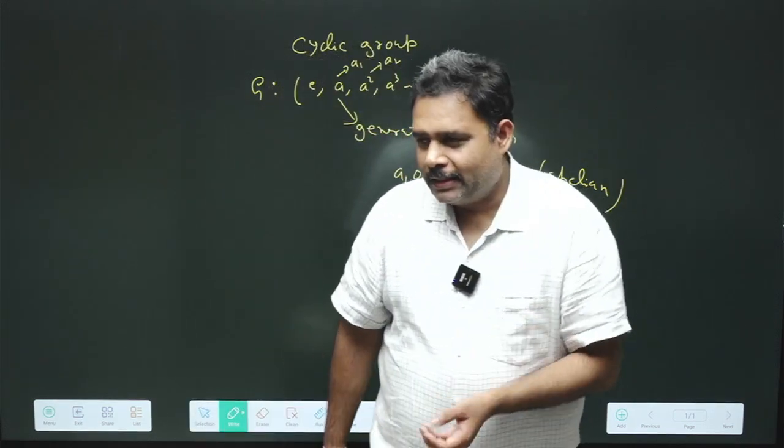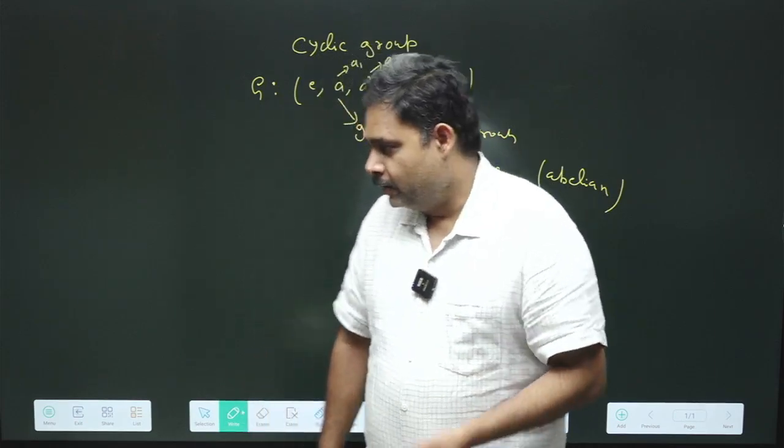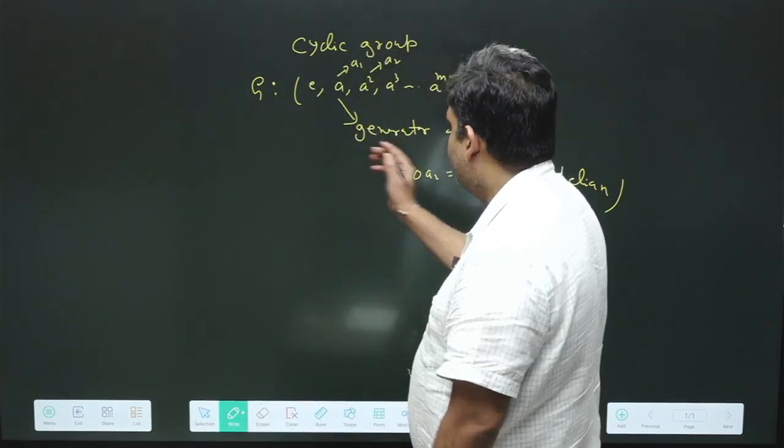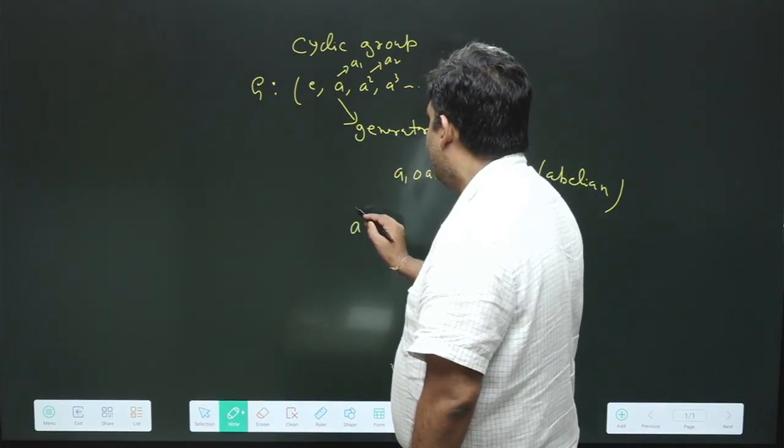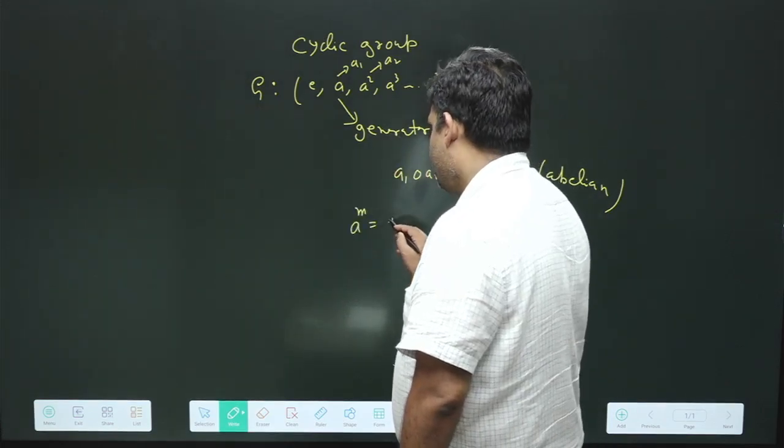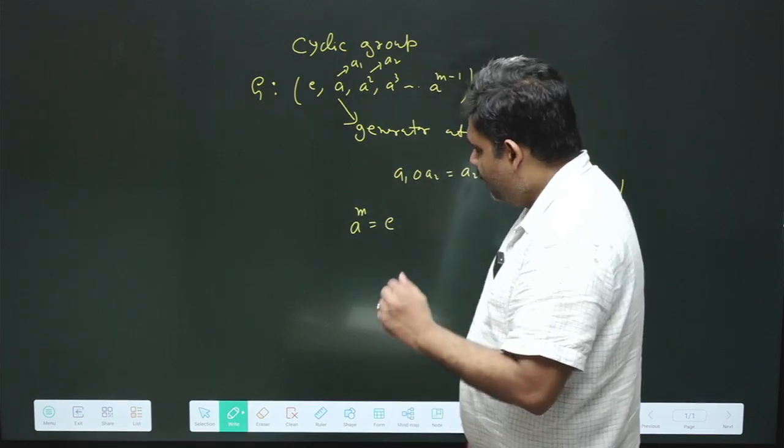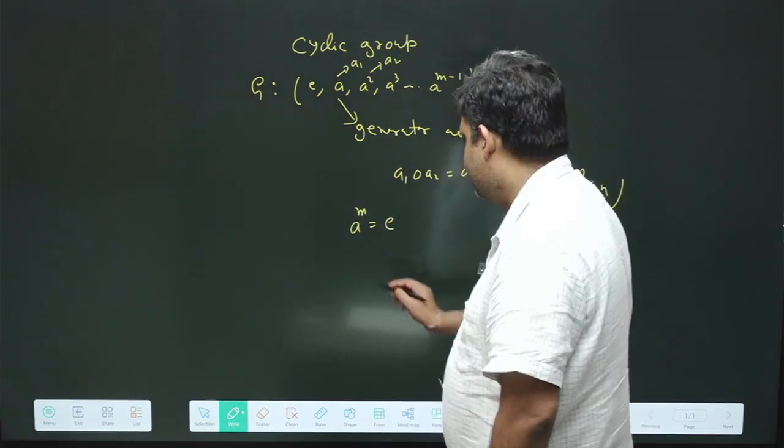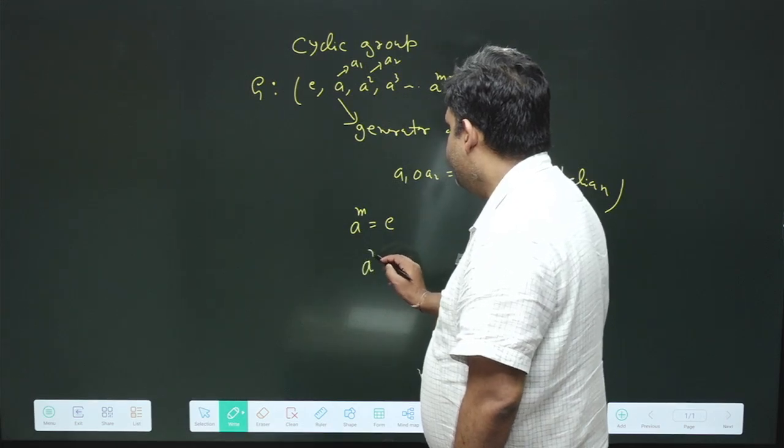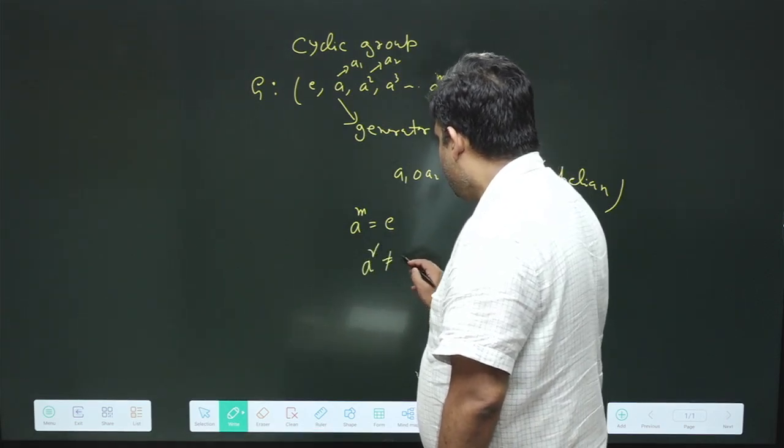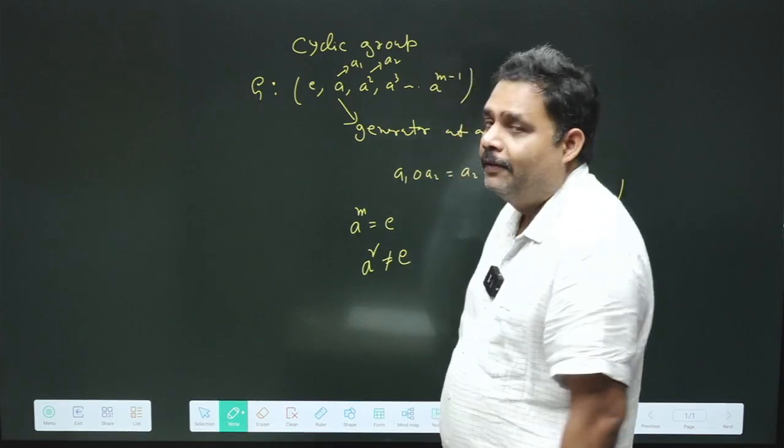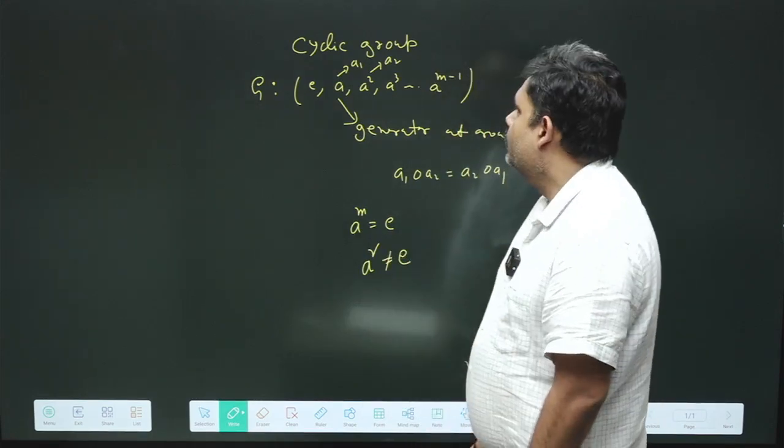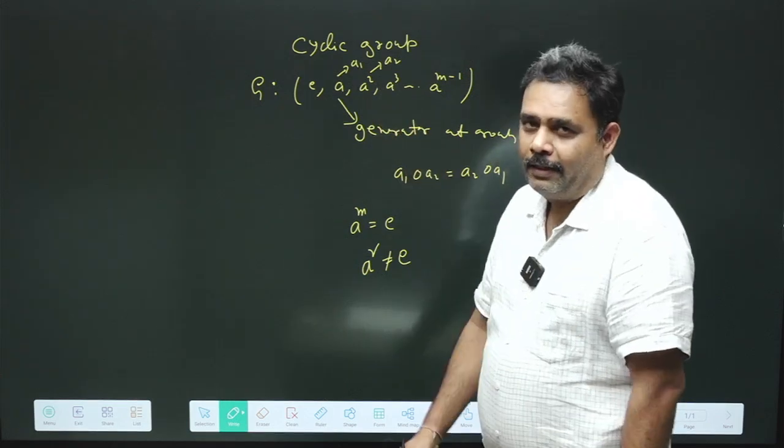Here we have to also discuss the order of an element. Suppose we have a group where A to the power M equals identity, and we can define R. If A to the power R is not going to identity, then R is said to be the order of this particular element.